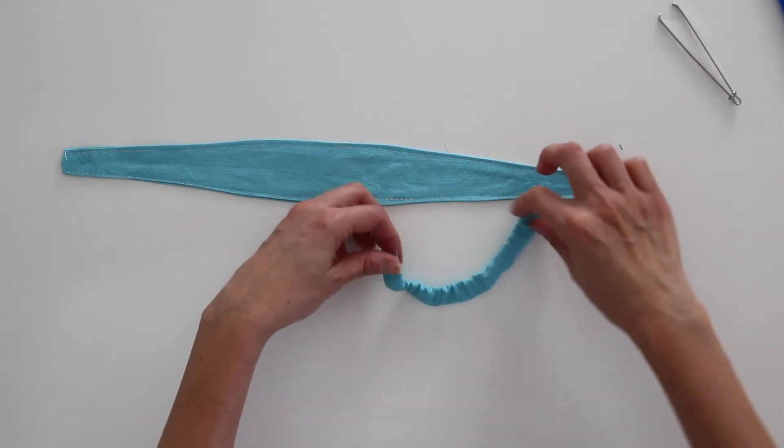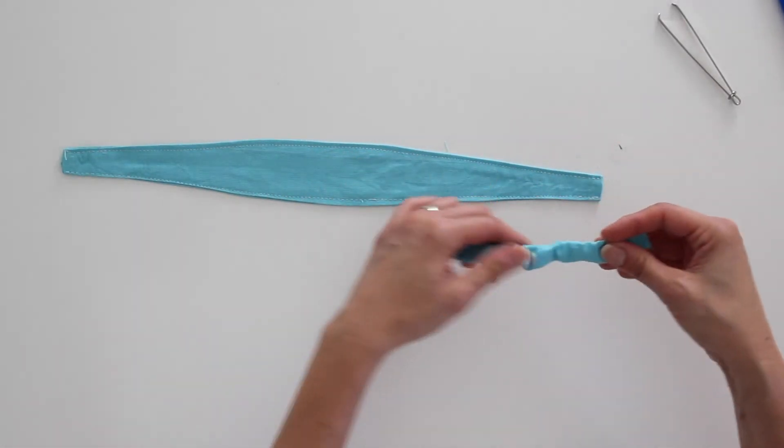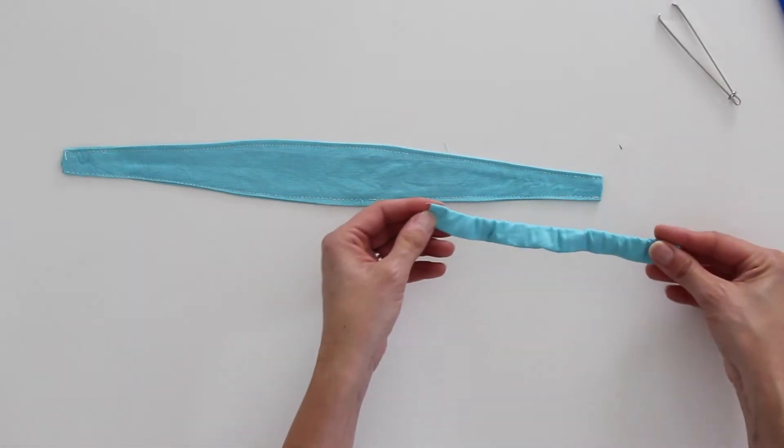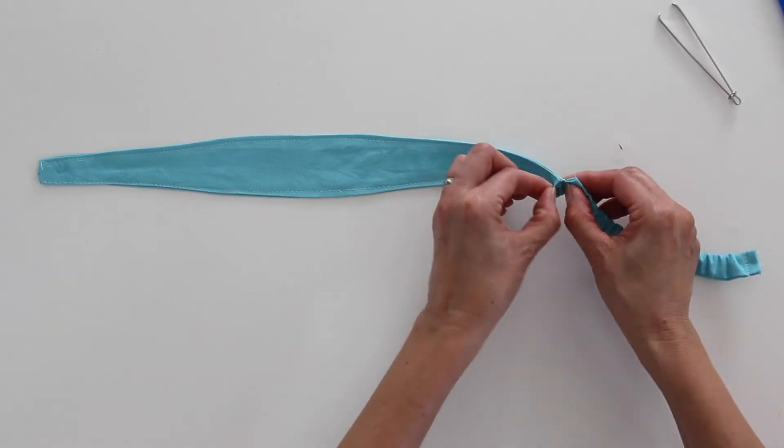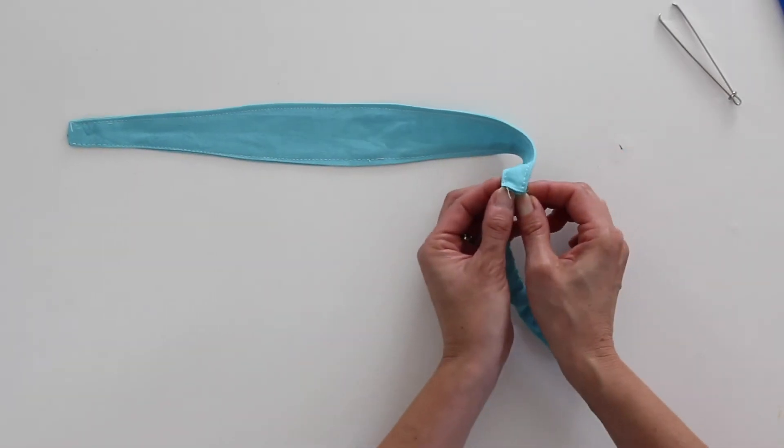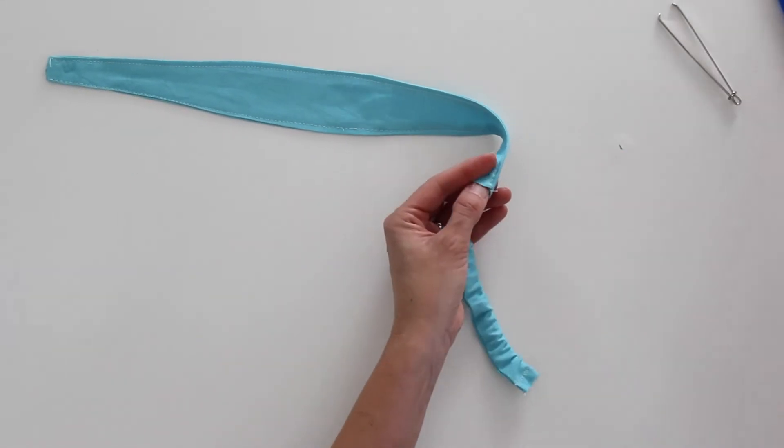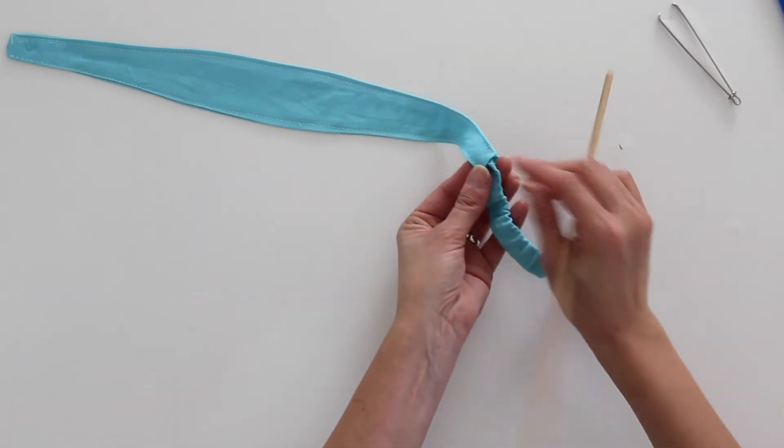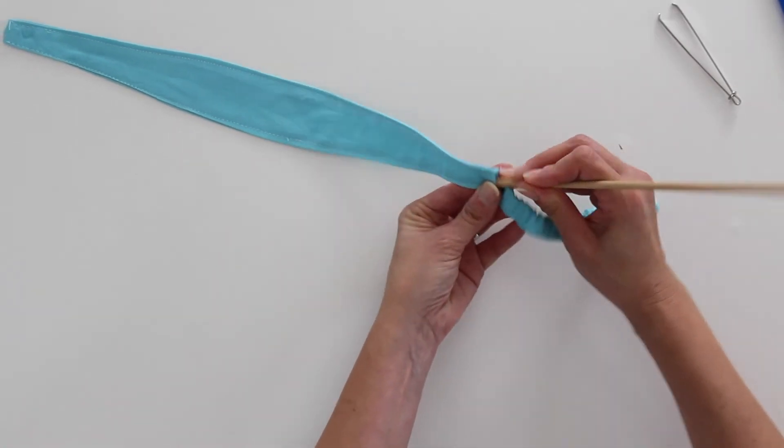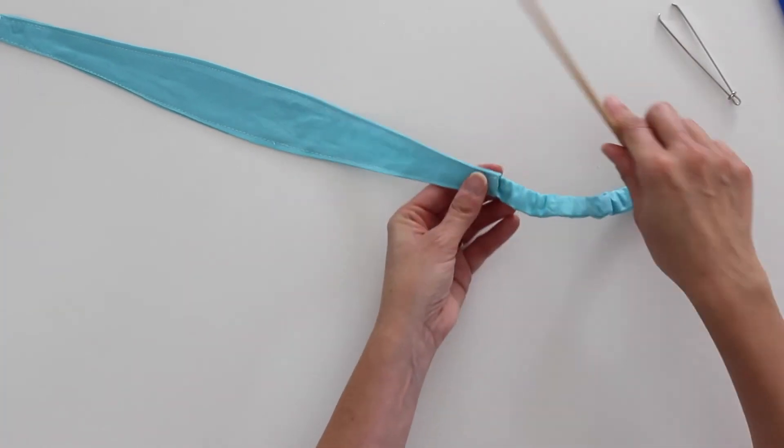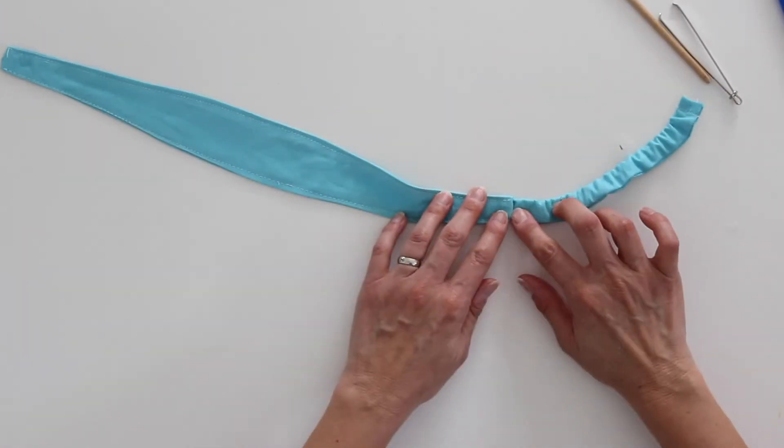All right, now I've got kind of a little scrunched piece of fabric with elastic on it. And now I can take the ends and I can push them into the ends, the open ends of my tube. And sometimes it's helpful to use a chopstick or the tool from my tube turner to help push this in.